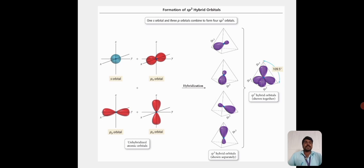These are the formation of SP3 hybrid orbitals. Here, the S orbital is combined with the three P orbitals to form the SP3 hybridization.